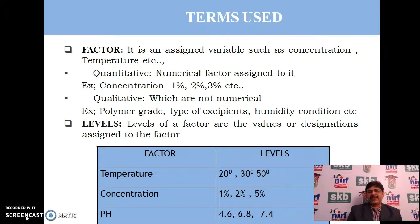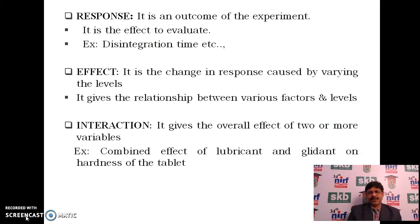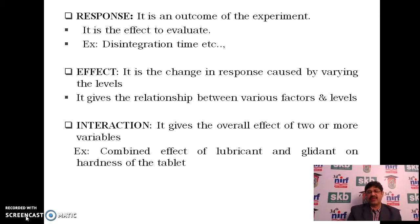Level: the values or designations assigned to a factor, for example temperature levels of 20°, 30°, or 50°. Response: the outcome of the experiment, such as hardness, disintegration time, or release rate. Effect: the change in response caused by varying the level — it gives the relationship between various factors and levels. Interaction: the overall effect of two or more variables combined, for example the combined effect of lubricant and disintegrant on the hardness of a tablet.